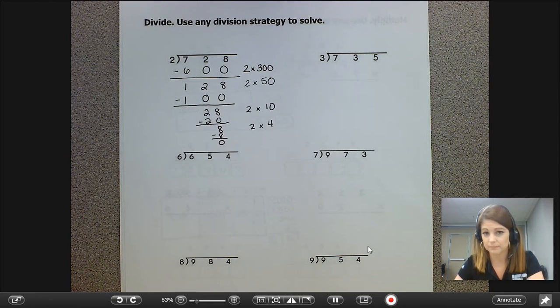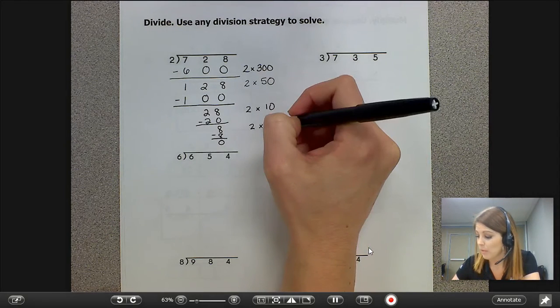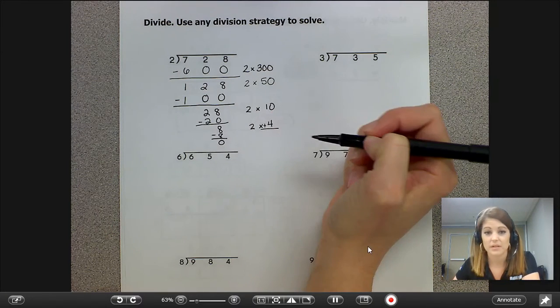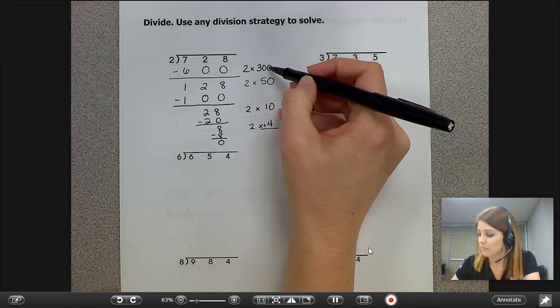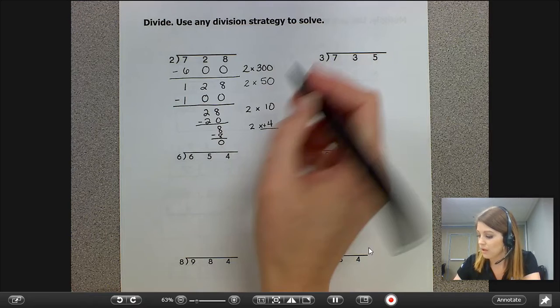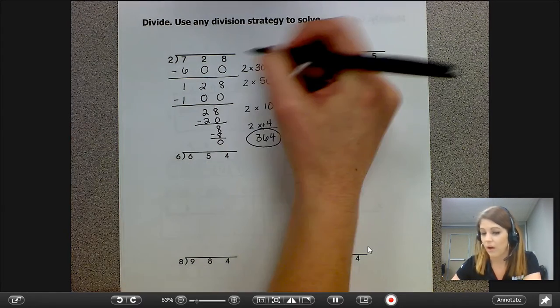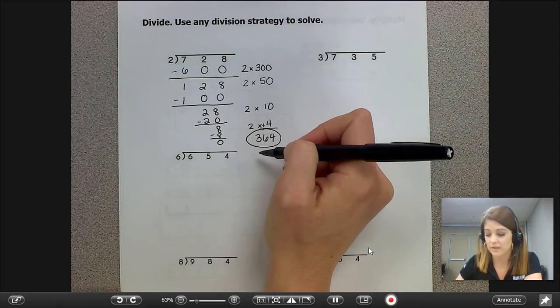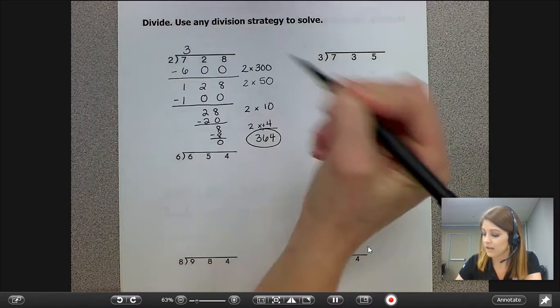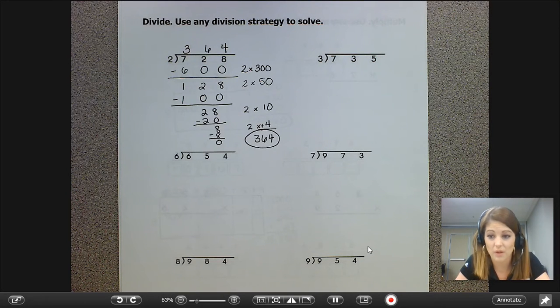I'm then going to come over here to my work and add up all of these quotients together. 300 plus 50 plus 10 plus 4. So 364. All of these partial quotients tell me that my final quotient is 364, or there are two groups of 364 in 728.